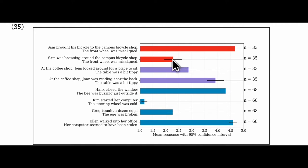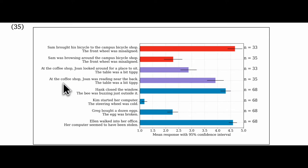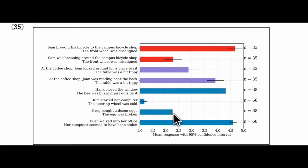The pair of examples with the purple bar shows the same sort of pattern. The first is: 'At the coffee shop, Joan looked around for a place to sit. The table was a bit tippy.' This gets low ratings, which might be predicted by Partee and Keenan. But both of them clearly predict low ratings for the next variant too: 'At the coffee shop, Joan was reading near the back. The table was a bit tippy.' But this got high ratings. Among the filler items: 'Greg bought a dozen eggs. The egg was broken' looks like a presupposition failure, because the meaning of 'egg' isn't a singleton in this context.